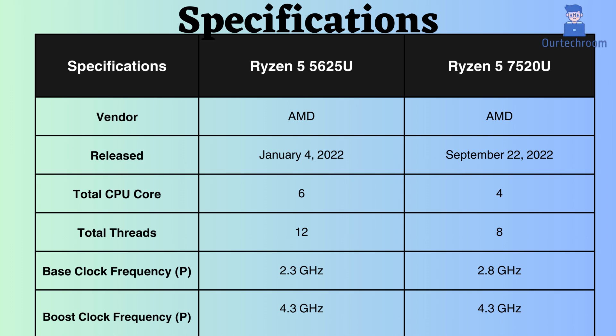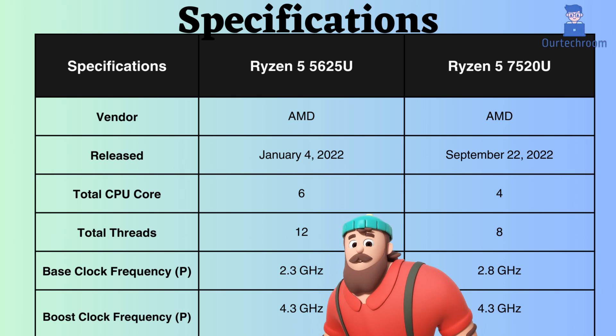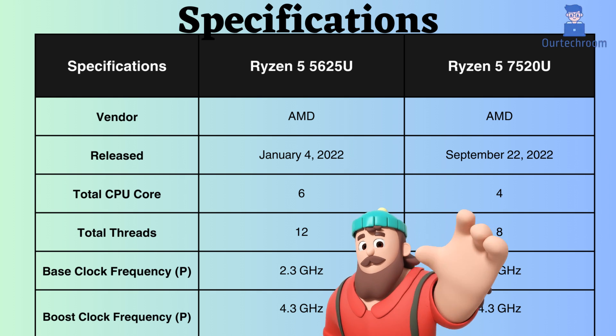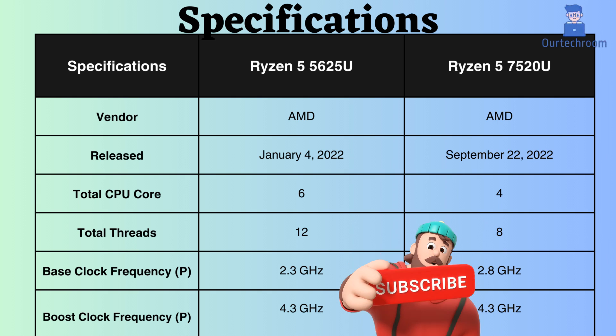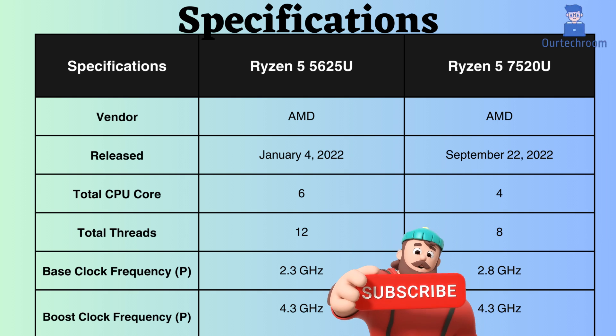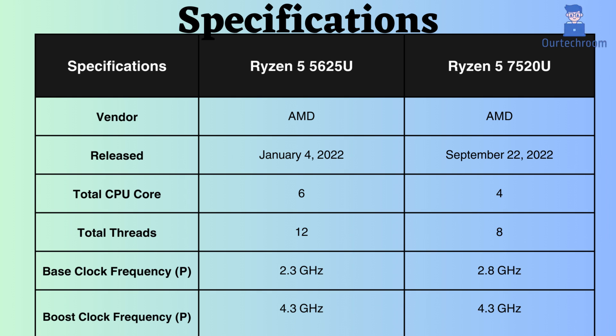The base clock frequency of the Ryzen 5 5625U is 2.3 GHz, while that of the Ryzen 5 7520U is 2.8 GHz. Analyzing the base frequency, it suggests that the Ryzen 5 7520U might perform better under normal CPU loads. Both processors share a boost clock frequency of 4.3 GHz.